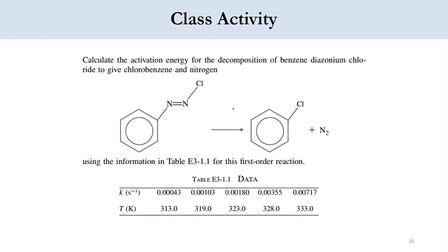Moving to our class activity: calculate the activation energy for the decomposition of benzene diazonium chloride to give chlorobenzene and nitrogen. The information of K and T is given, where K is the rate constant and T is the temperature. We have to calculate the value of activation energy using both the Arrhenius plot and the direct relationship in Excel.